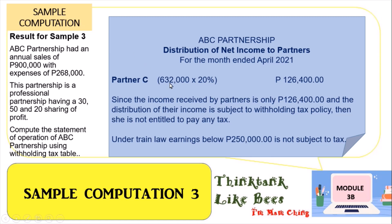For Partner C, 632,000 times 20 percent gives 126,400. Since the minimum amount not subject to tax is 250,000 and her income is only 126,400, she will not pay any withholding tax. I hope you understand the differences between computing professional partnership tax using the withholding tax table, professional partnership tax using the 8 percent outright tax, and general partnership tax at the 30 percent corporate rate.